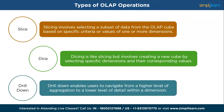Next, drill down enables users to navigate from a higher level of aggregation to a lower level of detail within a dimension. For example, you can drill down from yearly to quarterly, monthly, and even daily sales. This helps identify trends and patterns at different levels of granularity and allows you to see if there are specific periods when sales are particularly high or low.